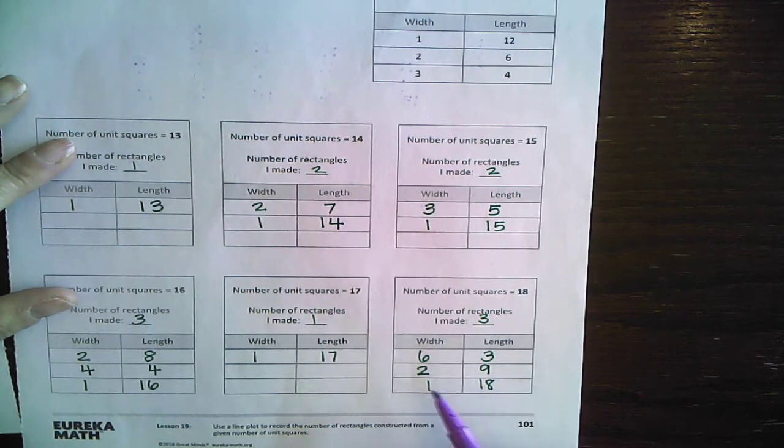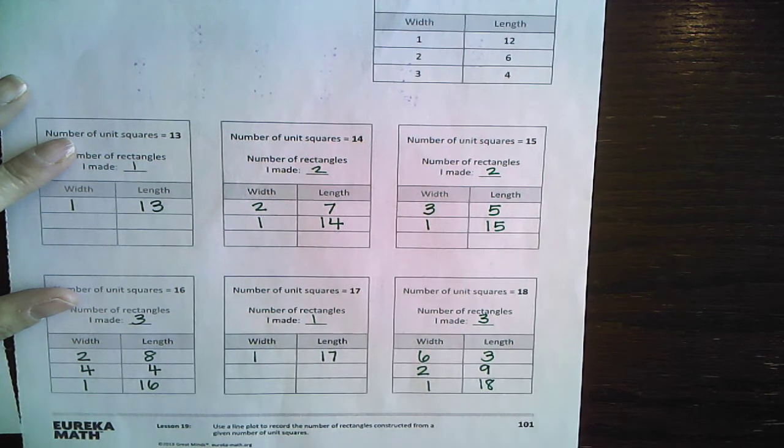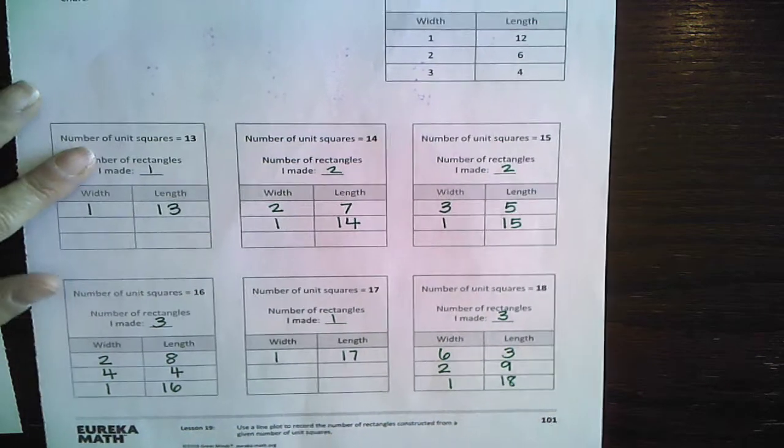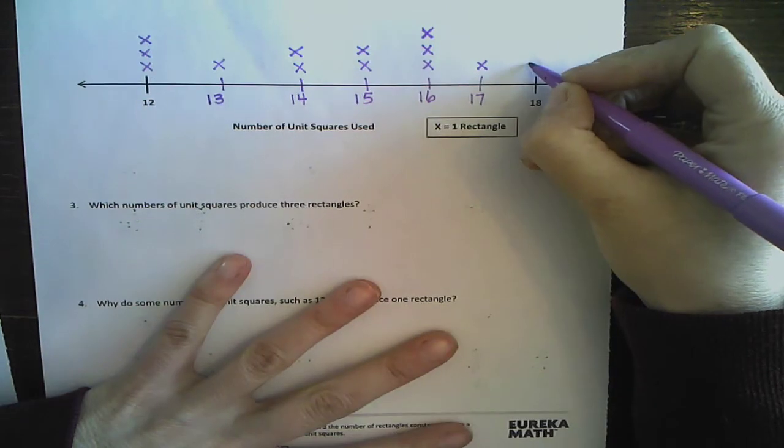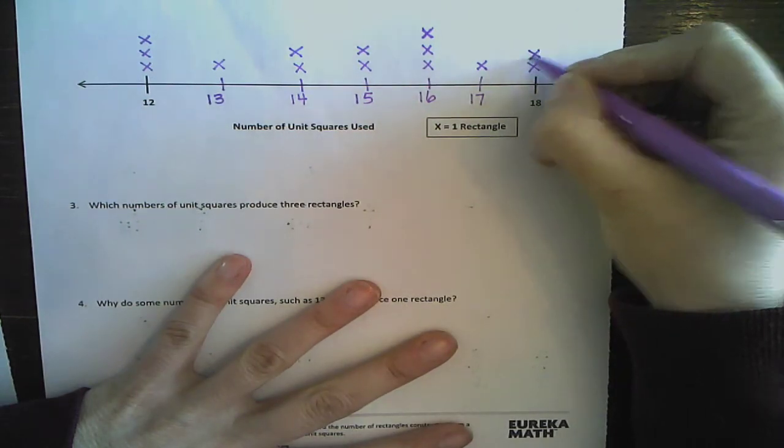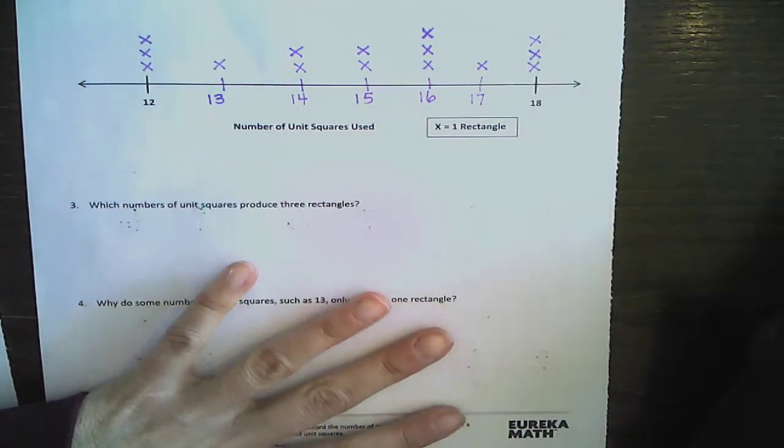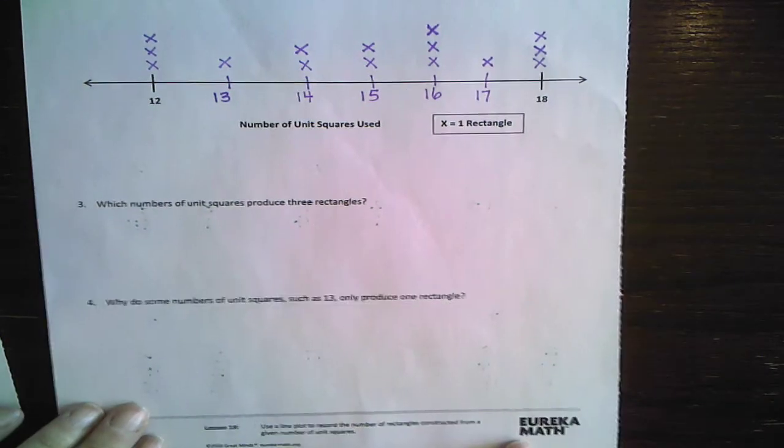And then lastly, 18. I got three for that one. Three times six, two times nine, and one times 18. Did you get the same? If you missed one, that's okay. Just fill it in now, right? Maybe I reminded your mind. This one has three also. One, two, three. Excellent.